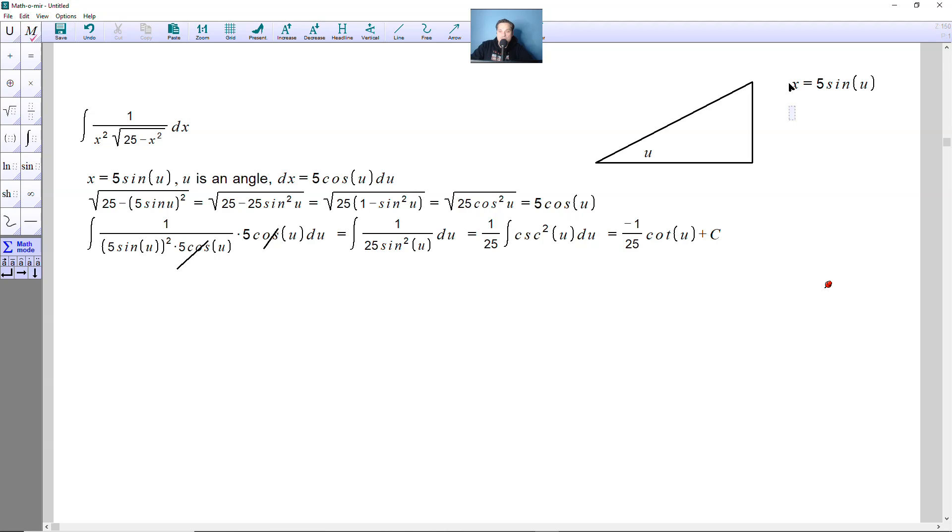Which means if you divide both sides by 5, it tells you that x over 5 is equal to the sine of u. Which means, in other words, that this has to be x, this has to be 5.